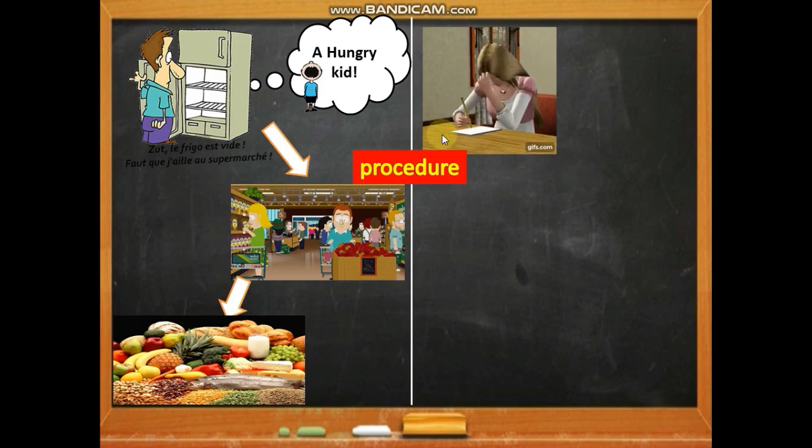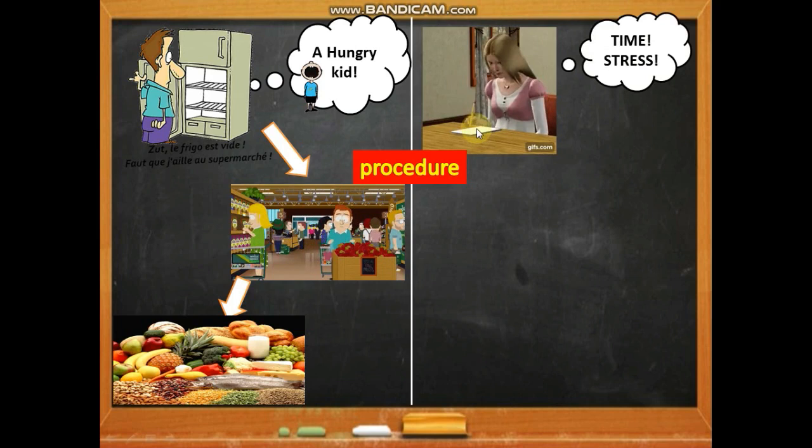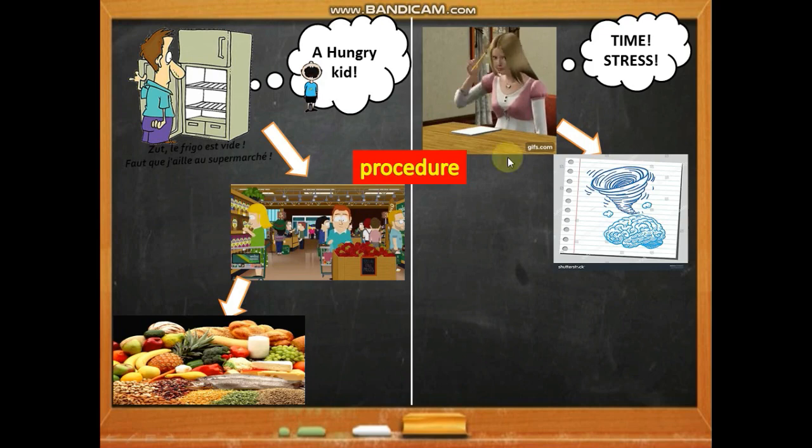When a student wants to write a paragraph, they face time and stress problems. The refrigerator is empty, so we go to the supermarket — and in the paragraph, we go to the brain. The brain does brainstorming.